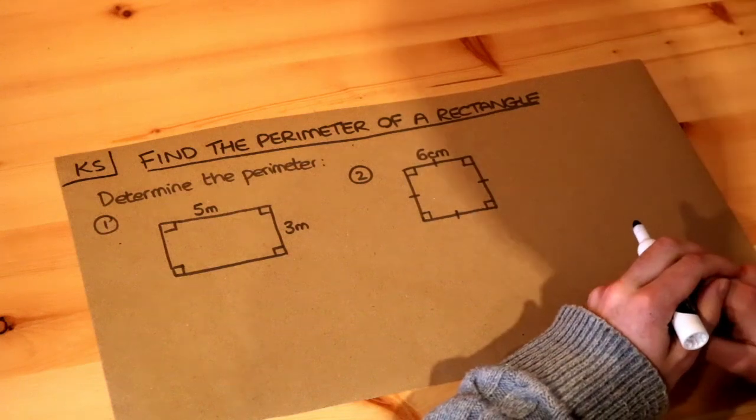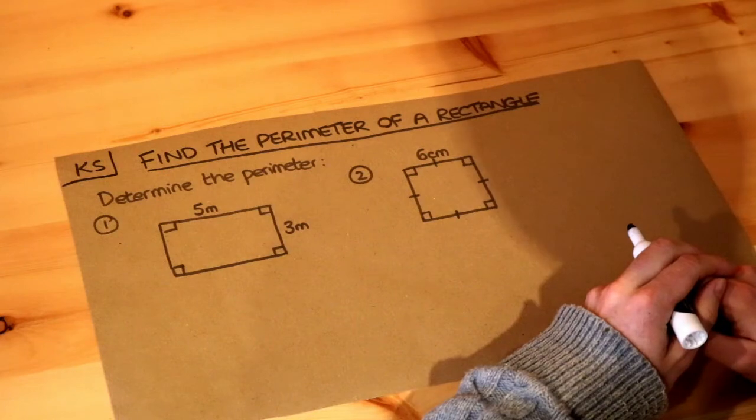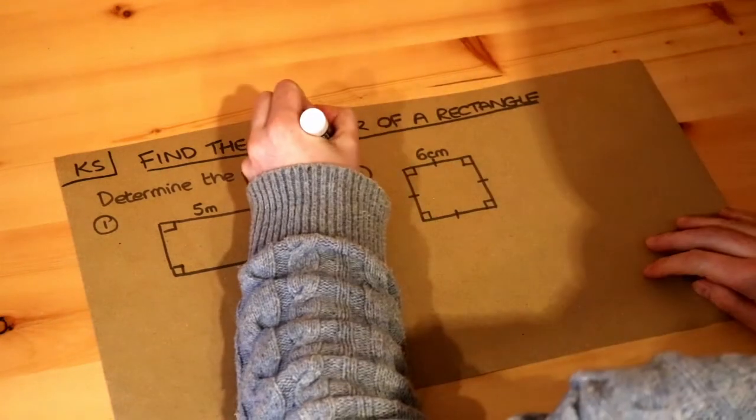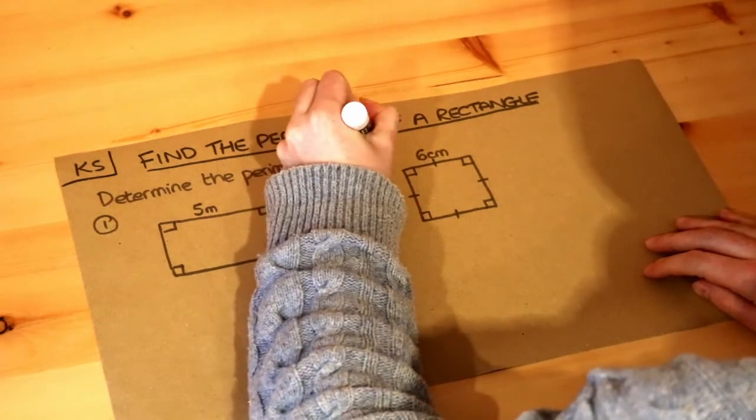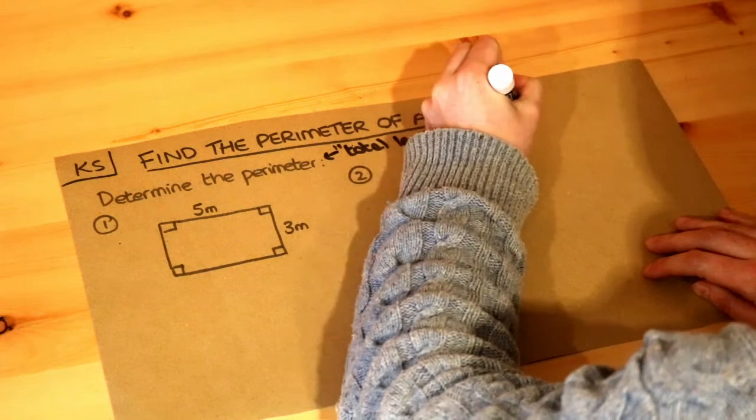Hello and welcome to this Dr. Ross Maths key skill video on finding the perimeter of a rectangle. Now what do we mean by the perimeter of a shape? Well, the perimeter just means the total length around the outside of a shape.